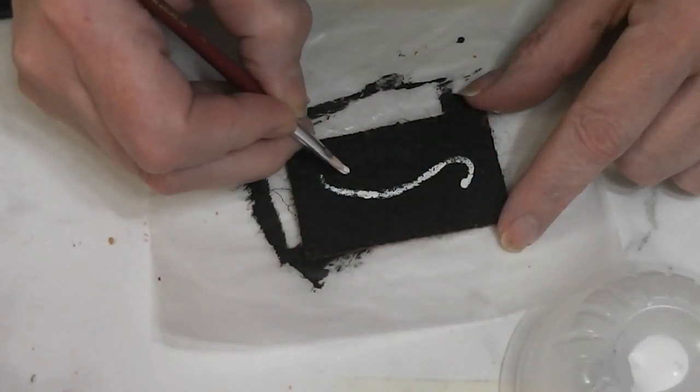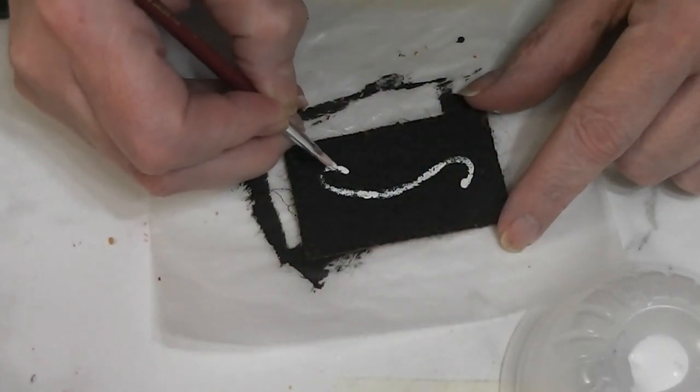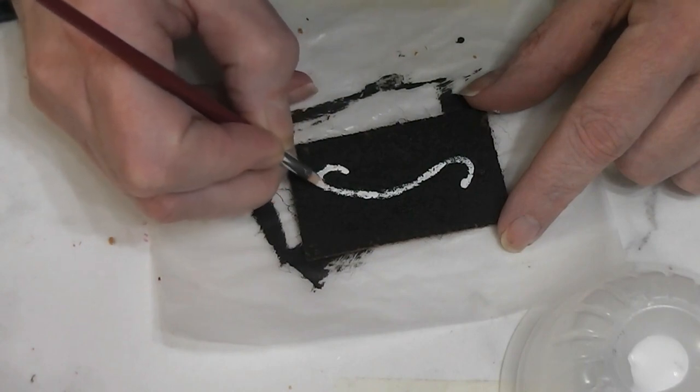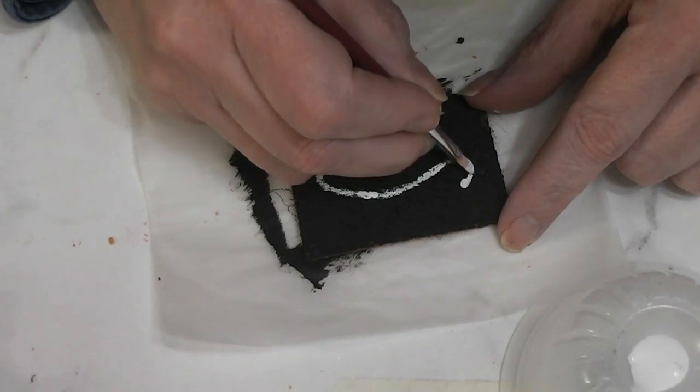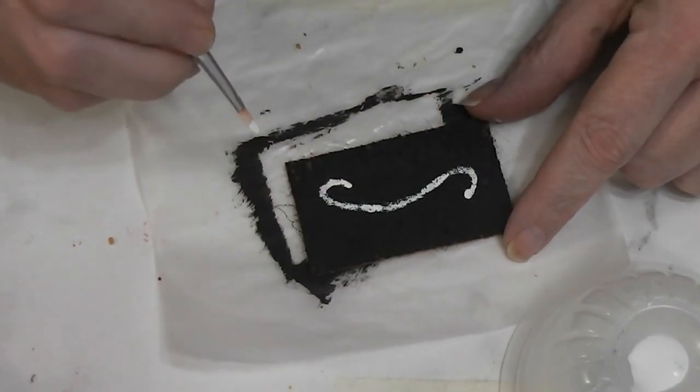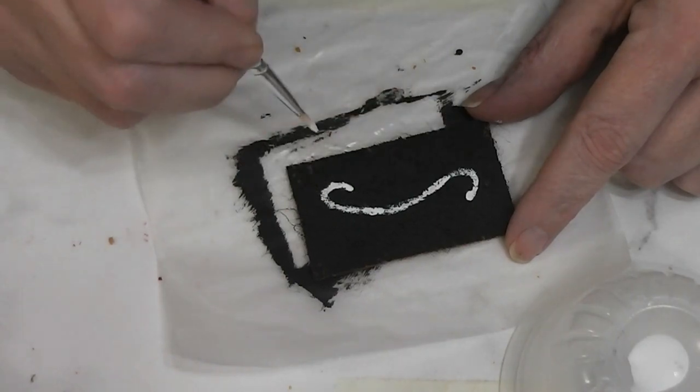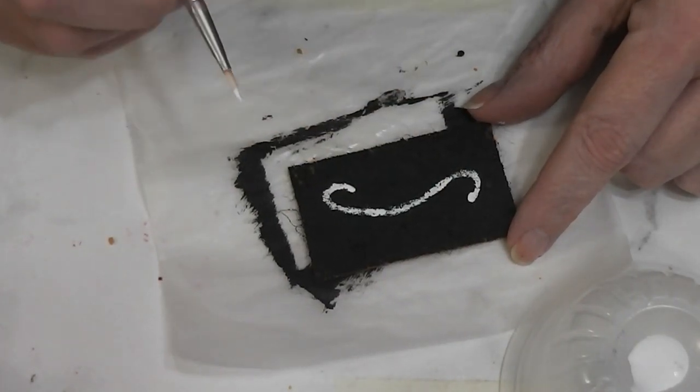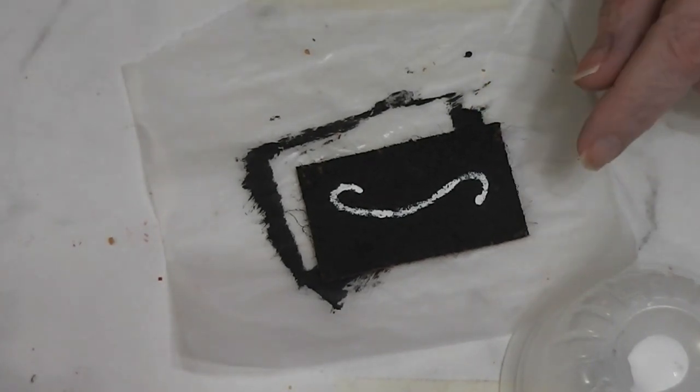And I will come back and do a second coat. Probably off camera, you don't need to watch every coat of paint go on. So I'm going to let this dry. When this is dry, I'm going to come back. I'm going to put more white right over the top of this white. And when that dries, I'll come back and we'll start adding our next step.